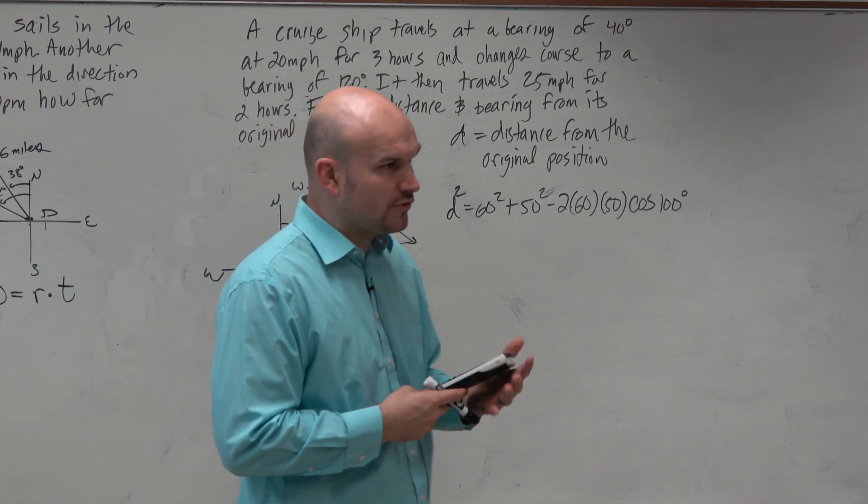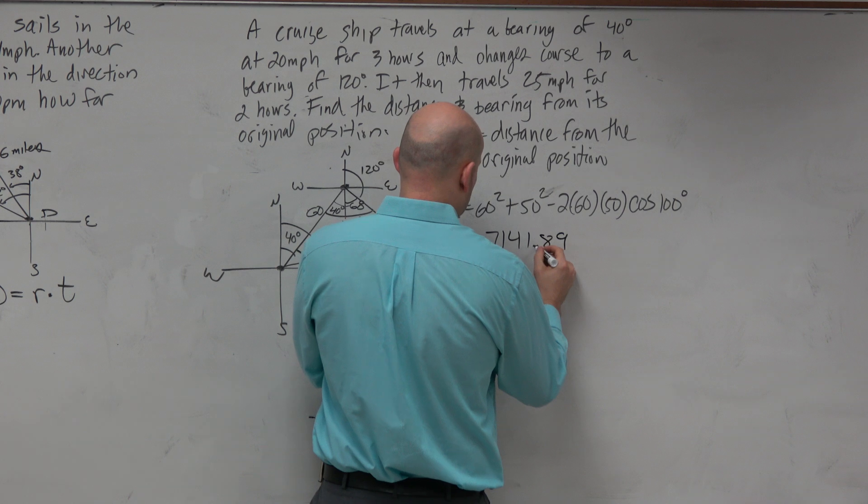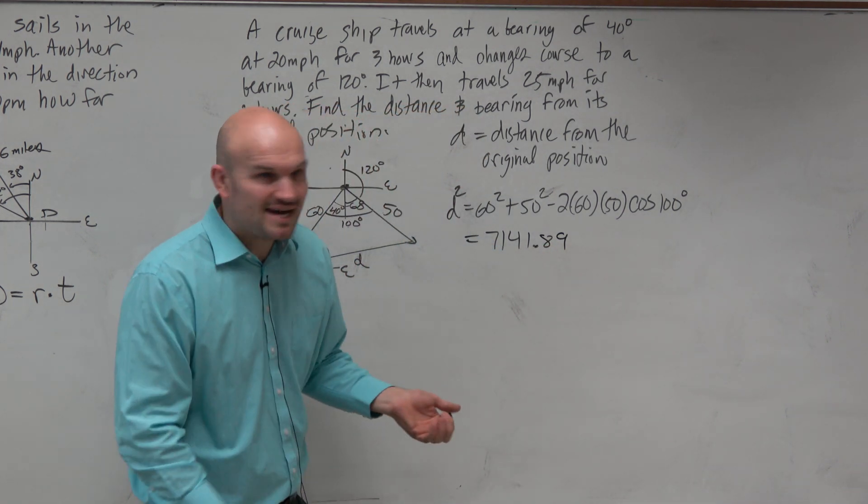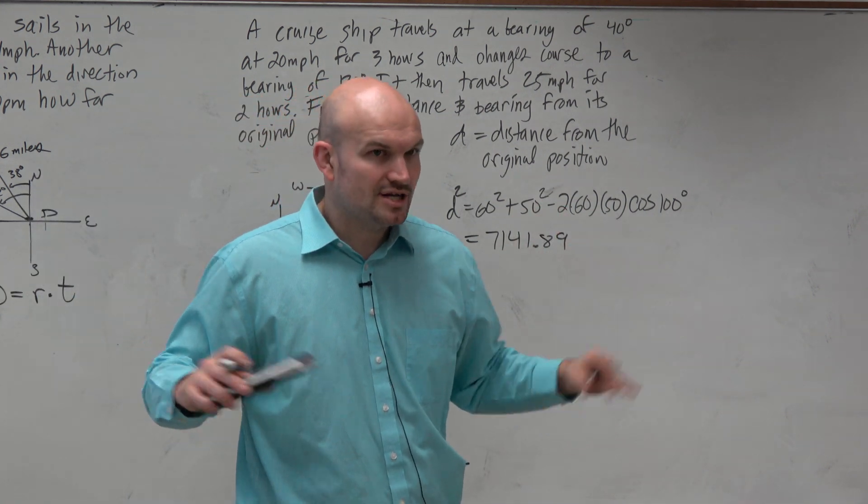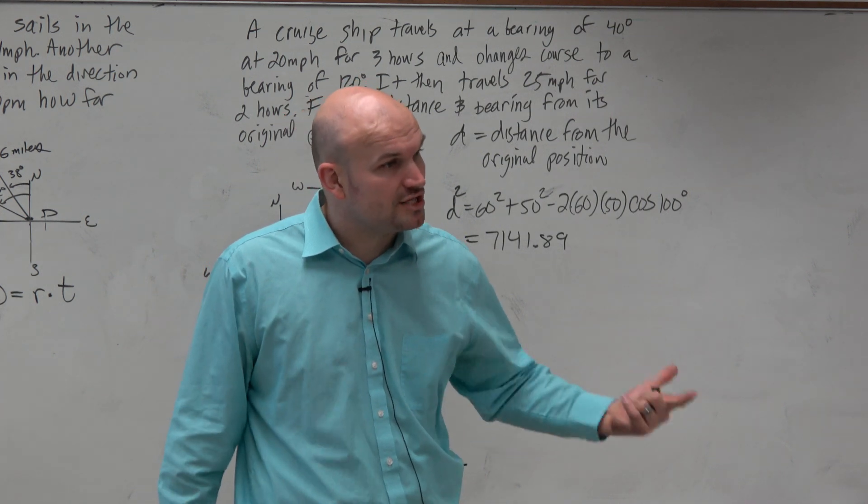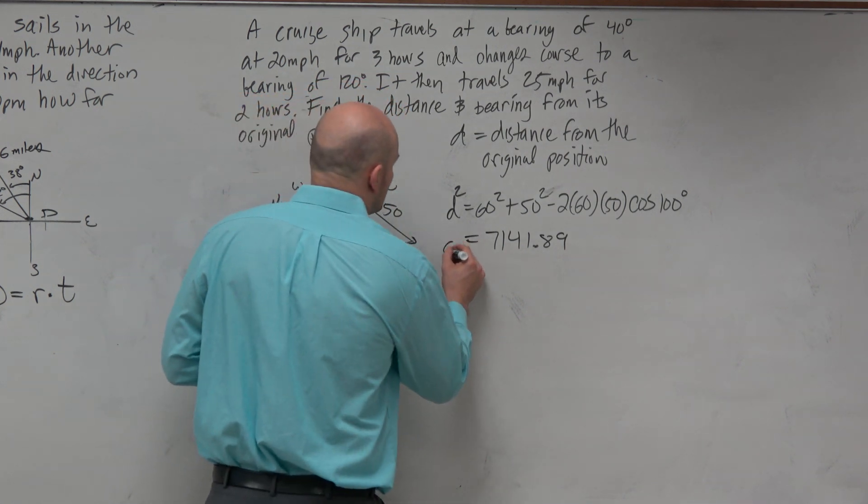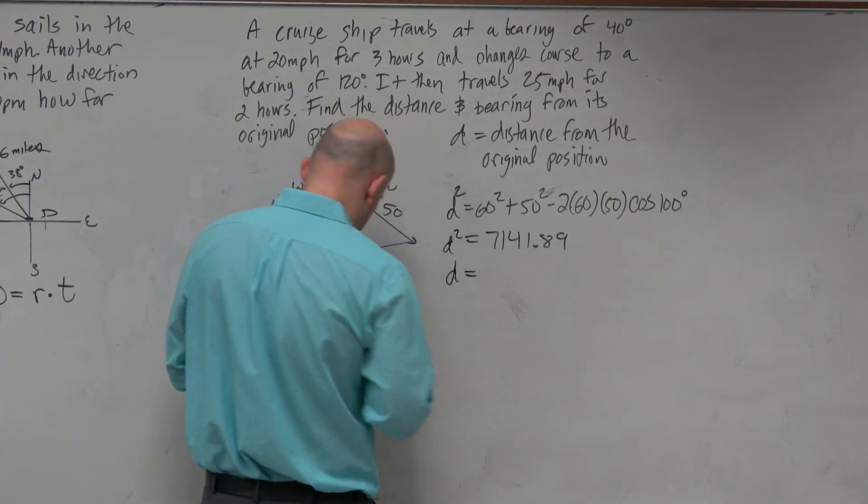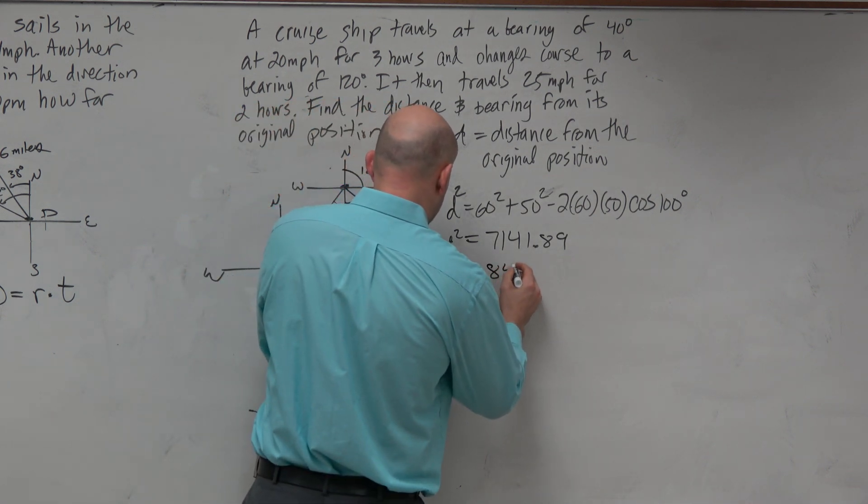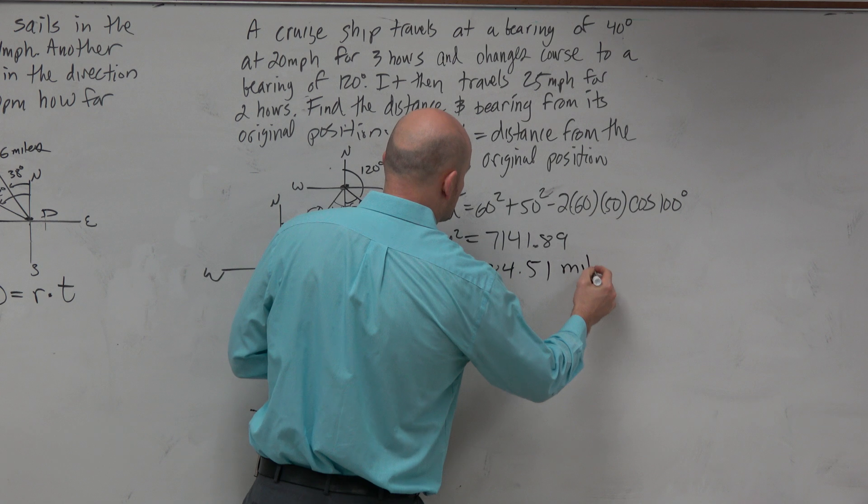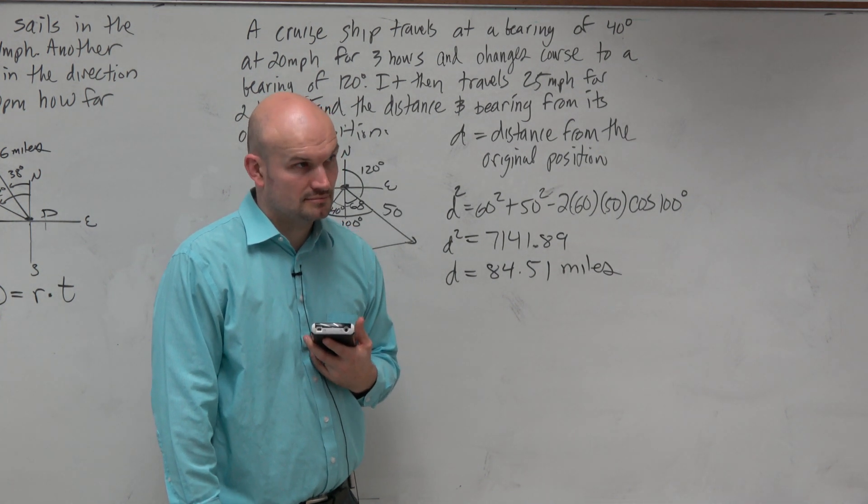So now we don't need to worry about order of operations. We can just type this all in together. 60 squared plus 50 squared minus 2 times 60 times 50 times the cosine of 100. And we get 7,141. Oh yeah, you're right, we've got to do miles. Now does that make sense? You travel 60 miles, you travel 50 miles, now you're 7,000 miles away? So slow down. Does your question make sense? No. So then we go back and say, oh that's right, d squared is equal to that. So I've got to square root it, and remember use the last answer, and I'm going to get 84.51 miles.